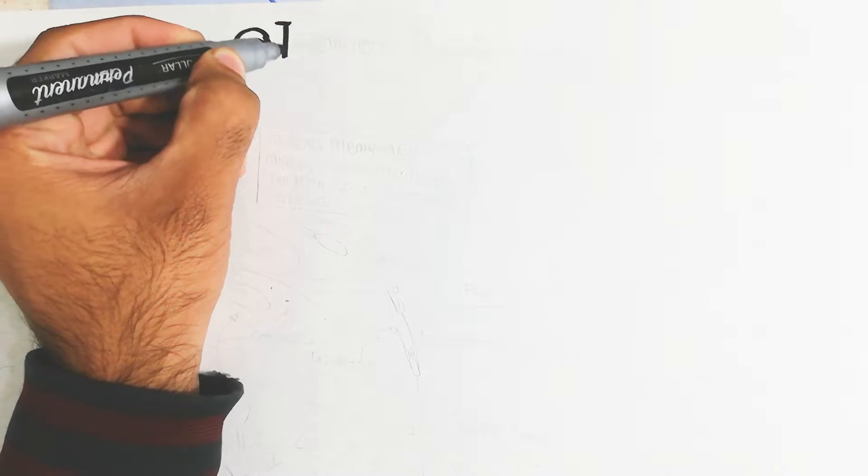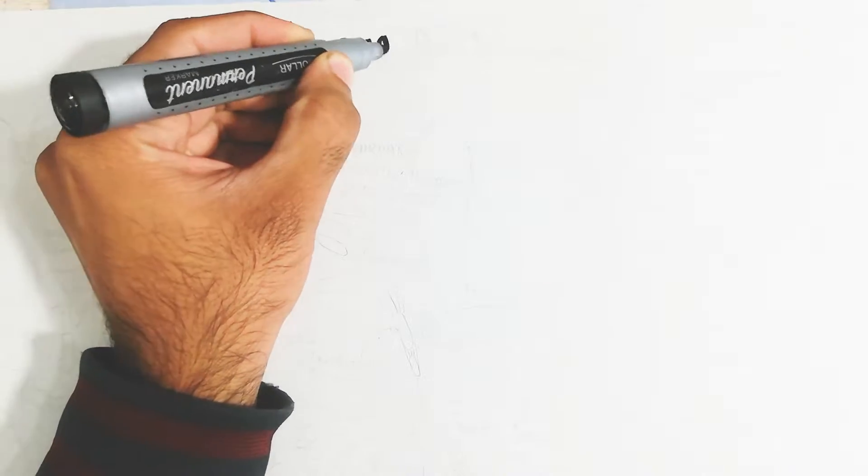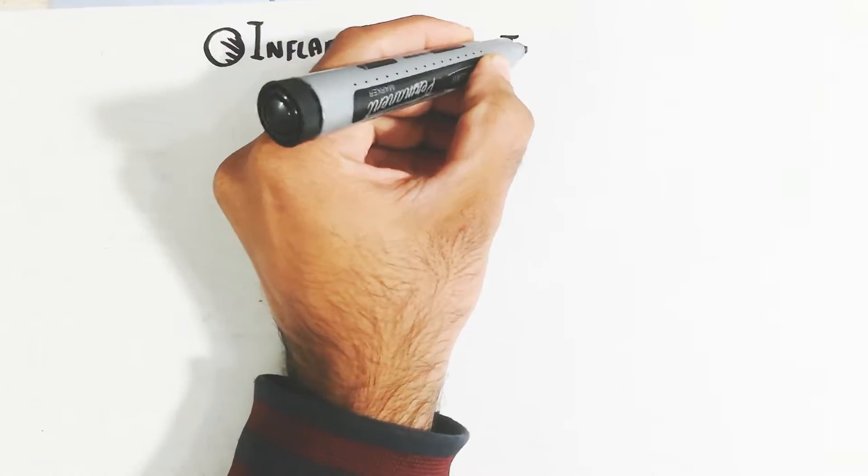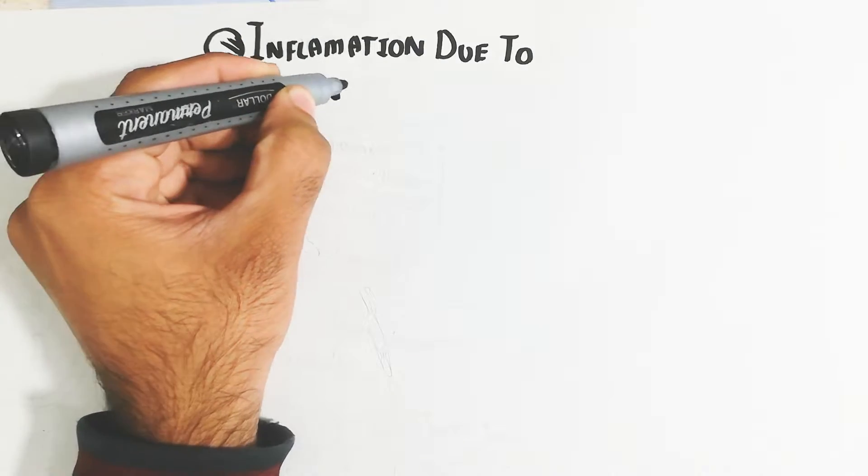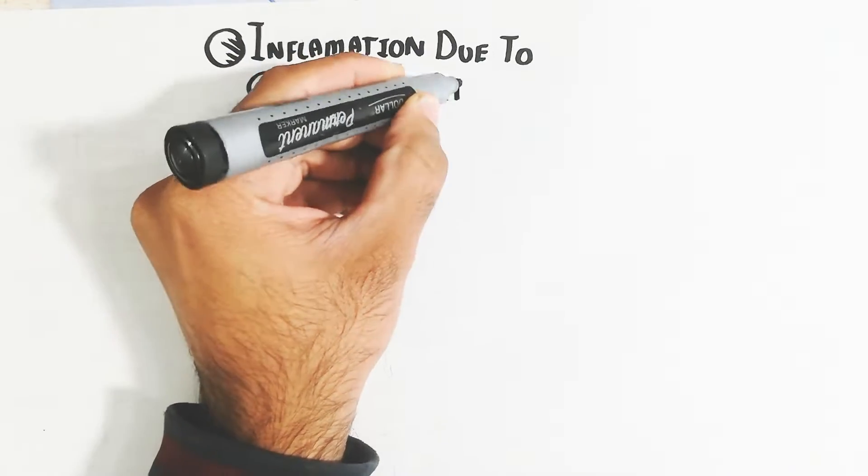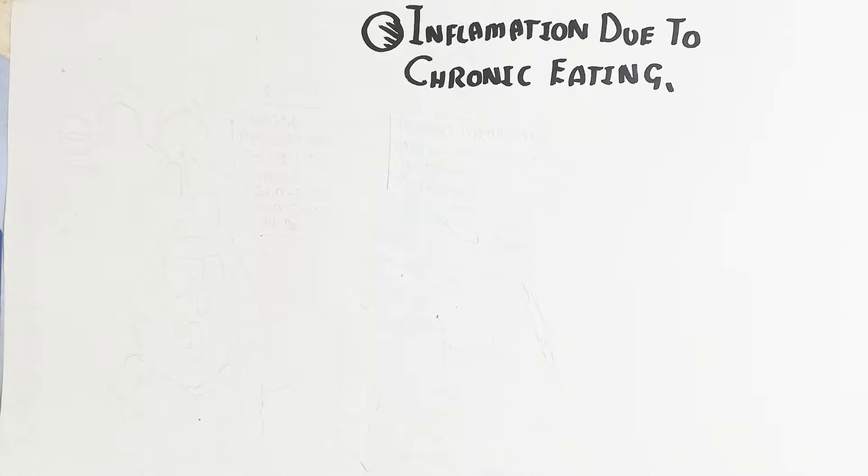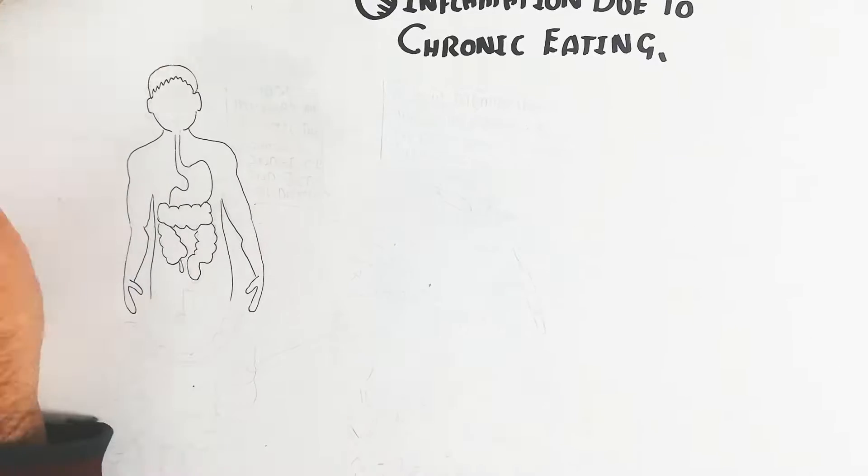Hello, in this video we will learn about inflammation due to chronic eating - not intermittently, but eating snacks as well as three-time meals. So what will happen? Let's begin to understand. This is a quick overview: this is a person when they eat food.